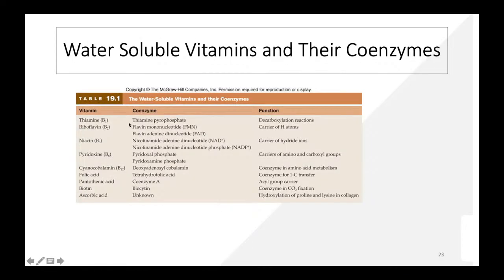Many coenzymes have modified vitamins in their structure. Examples of water-soluble vitamins and their coenzymes: thiamine (vitamin B1) → thiamine pyrophosphate; riboflavin (B2) → flavin mononucleotide (FMN) or flavin adenine dinucleotide (FAD); niacin (B3) → nicotinamide adenine dinucleotide (NAD).